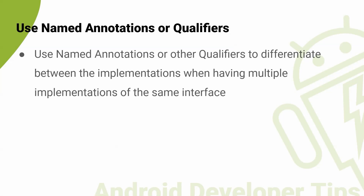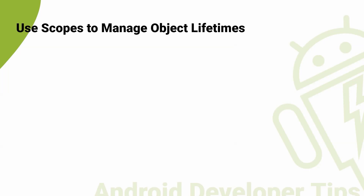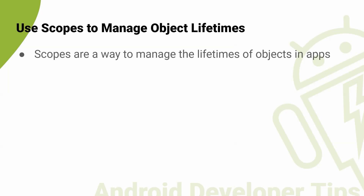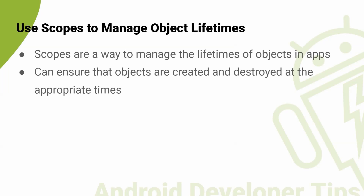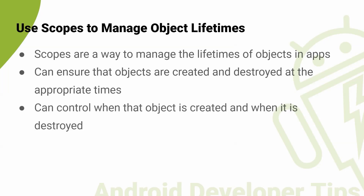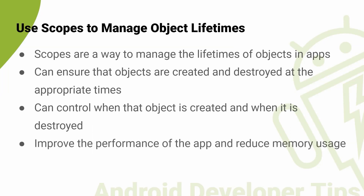And as the last point, use scopes to manage object lifetime. Scopes are a way to manage the lifetime of objects in your app. By using scopes, you can ensure that objects are created and destroyed at the appropriate times. Dependency injection scopes are a powerful tool — by defining a scope for a particular object, you can control when it is created and when it is destroyed. This can help to improve the performance of your app and reduce memory usage and memory leaks.